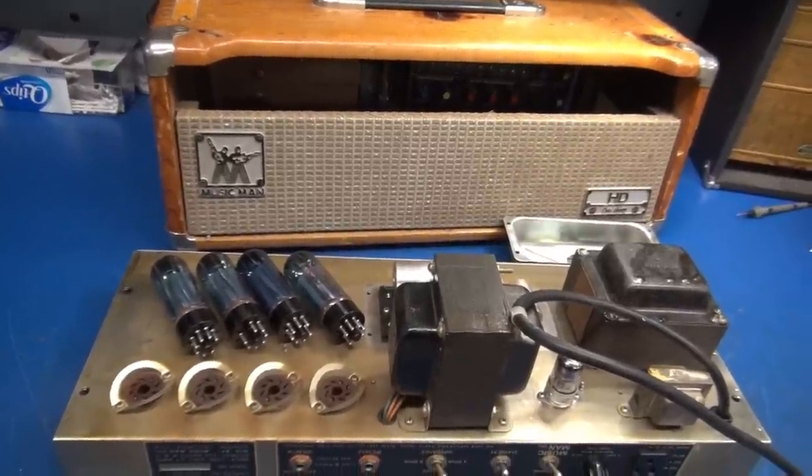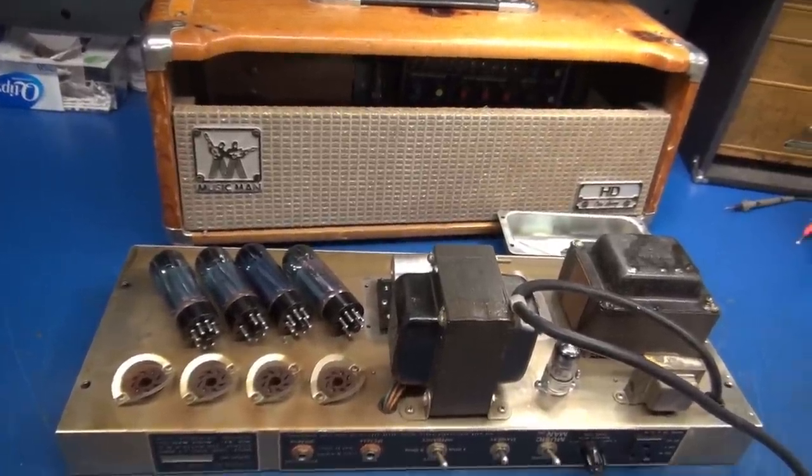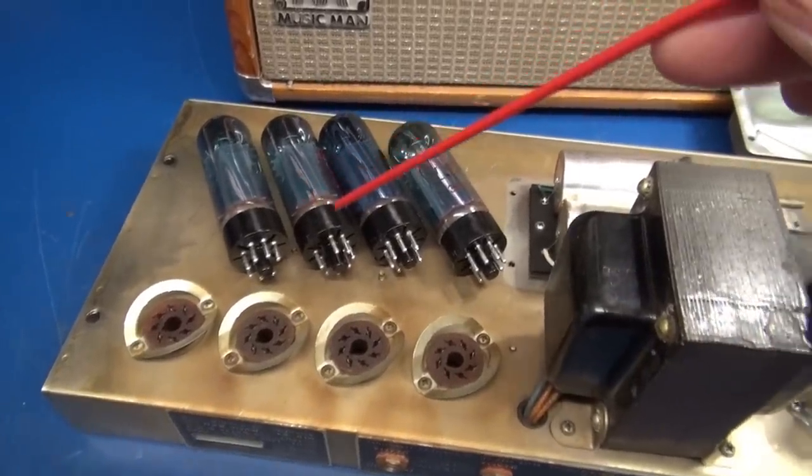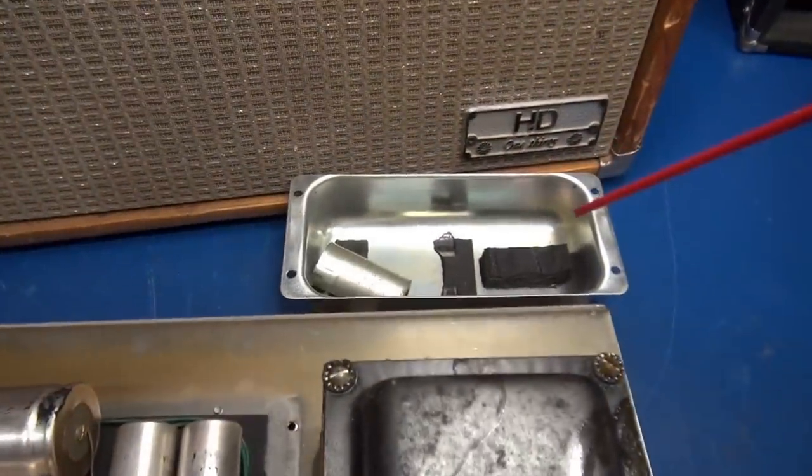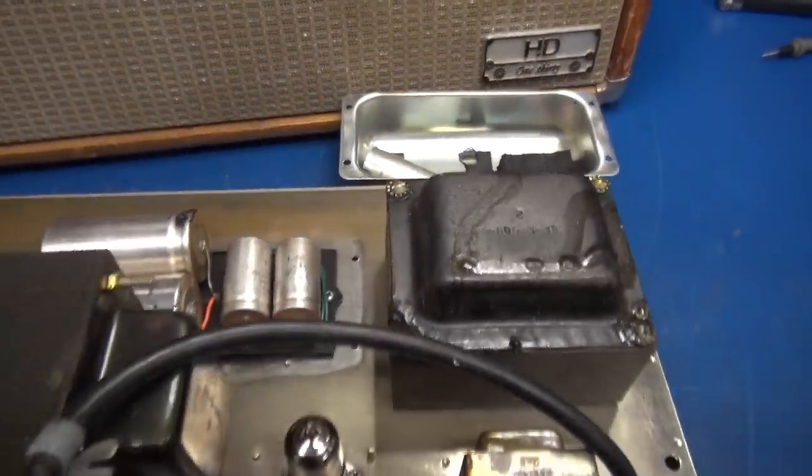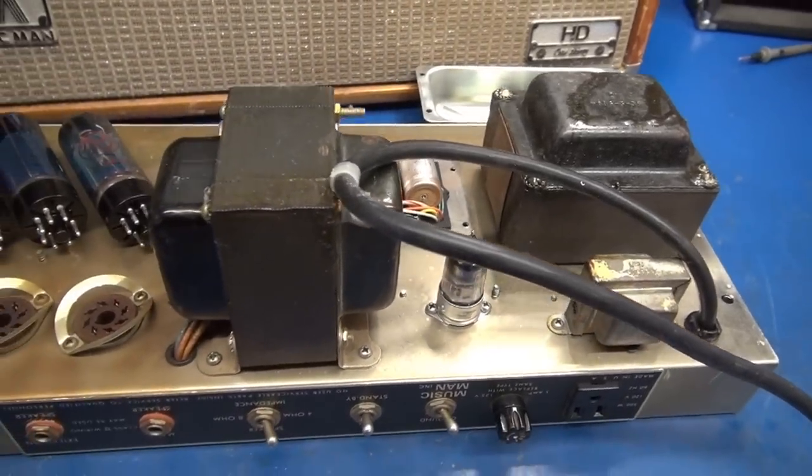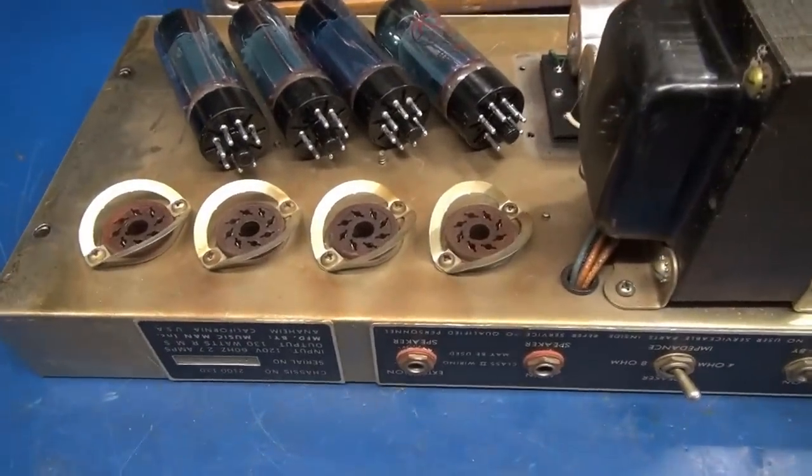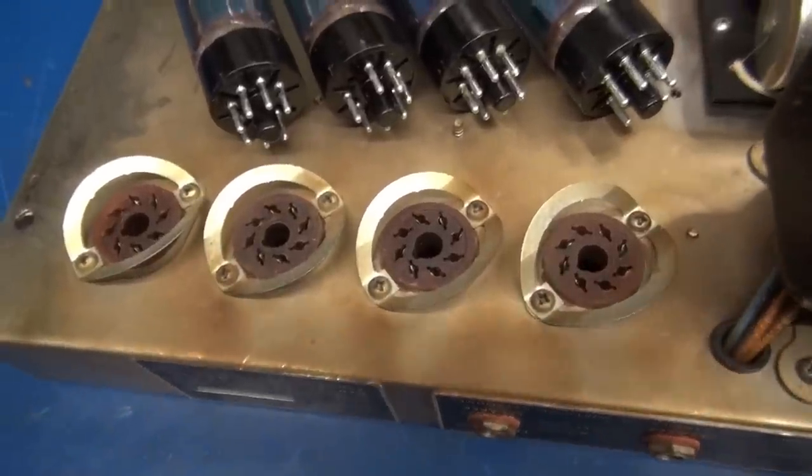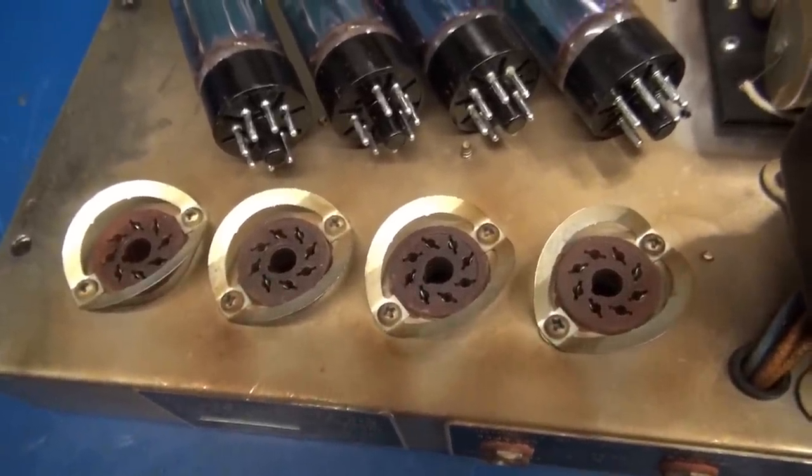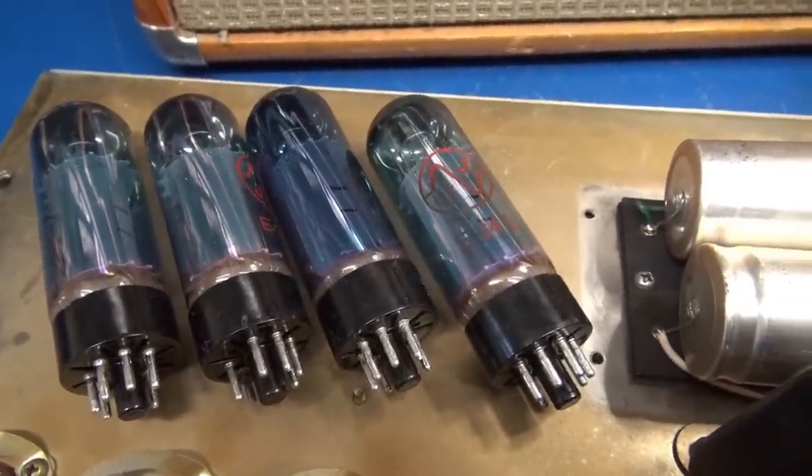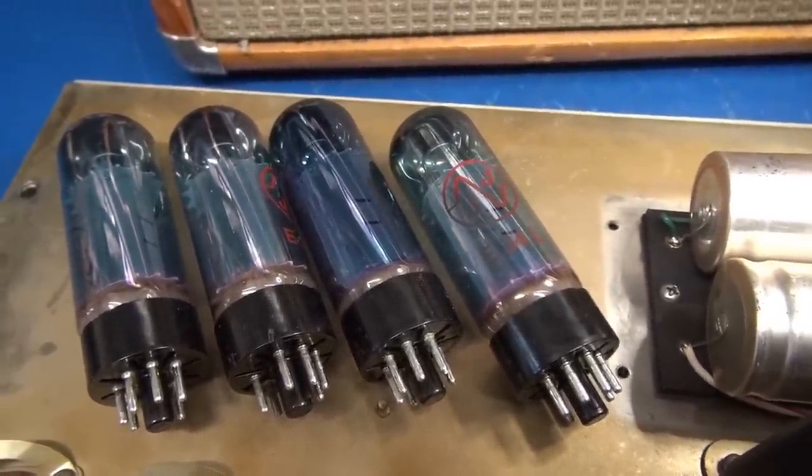Let's give the amp a good visual inspection, see if we can spot anything obvious. I have already removed the output tubes and the cap cover for the inspection. Top side, you can see the transformers are all original. Rear panel looks good. The output tube sockets show some signs of heating. These JJ tubes look like they have been in use, but they may be okay.